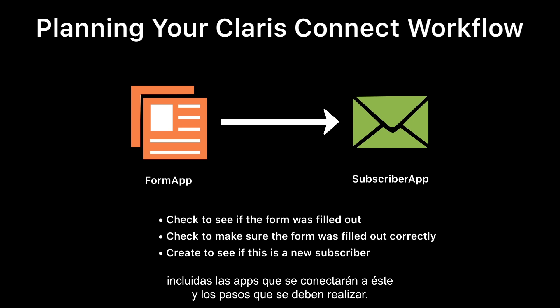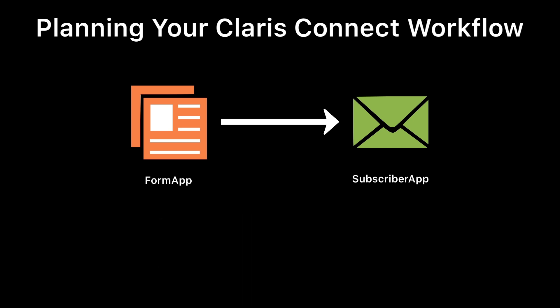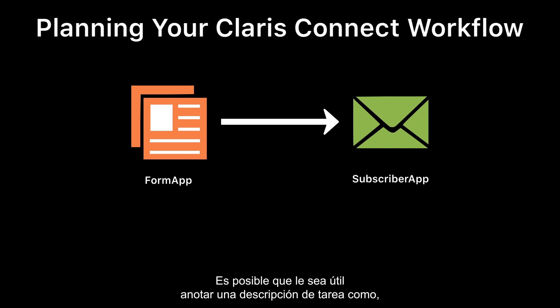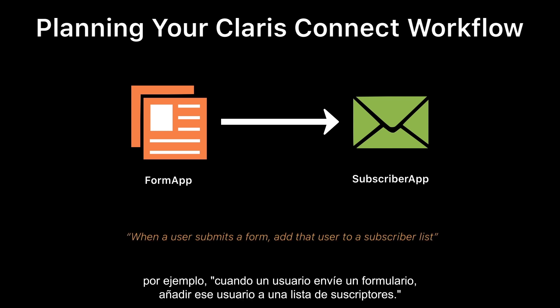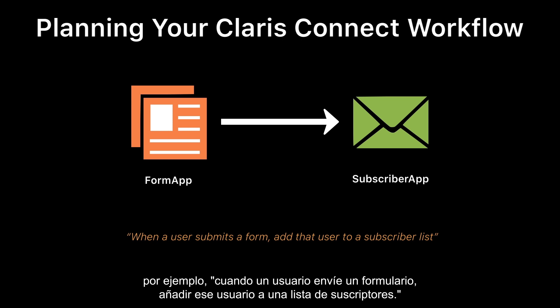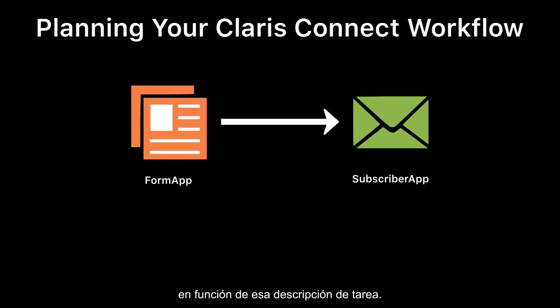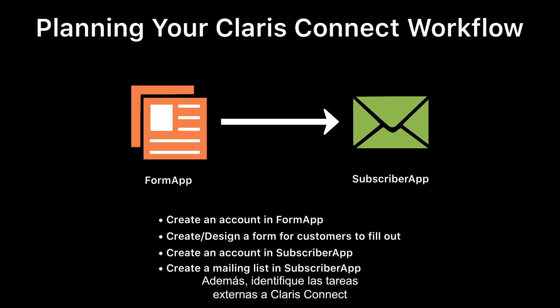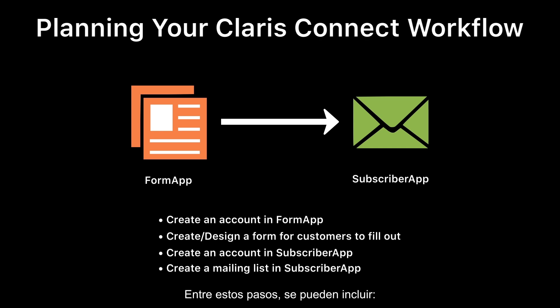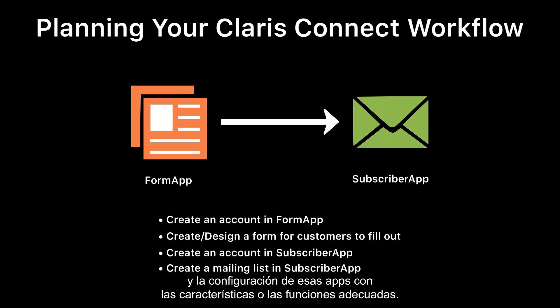To begin using Claris Connect, you need to determine the workflow you want to automate, including the apps to connect to and the steps that you need to perform. You might find it useful to write down a task statement, such as: when a user submits a form, add that user to a subscriber list. You can then plan your project and flows based on this task statement. Also, identify tasks that are external to Claris Connect that are needed for your flow to execute correctly, such as creating user accounts for those external apps and configuring those apps with the appropriate features or functionality.